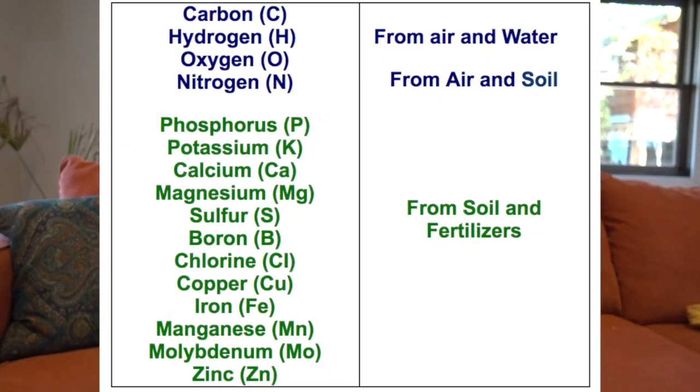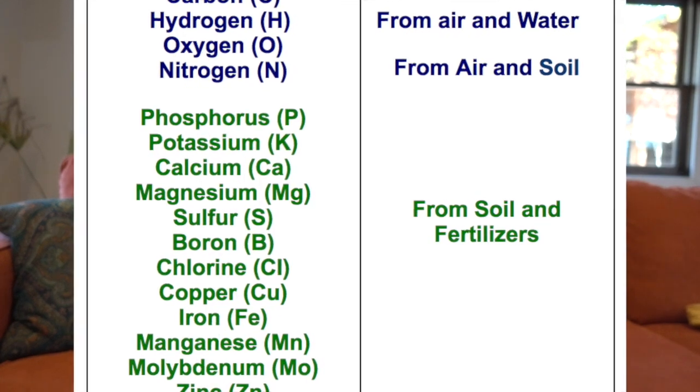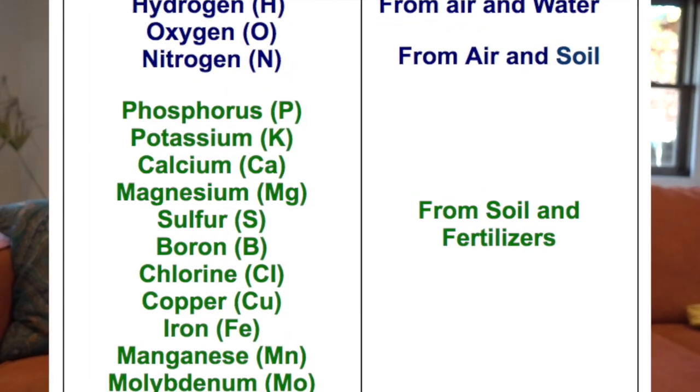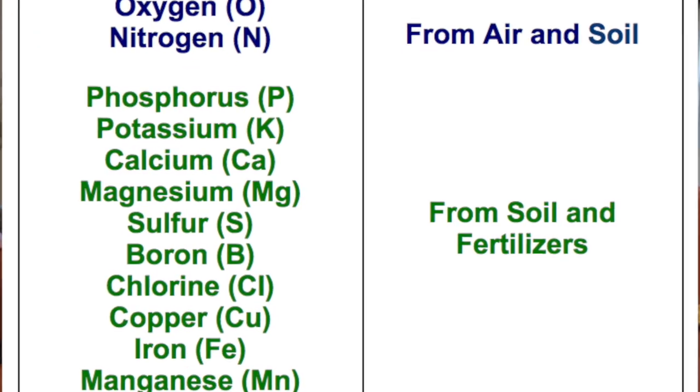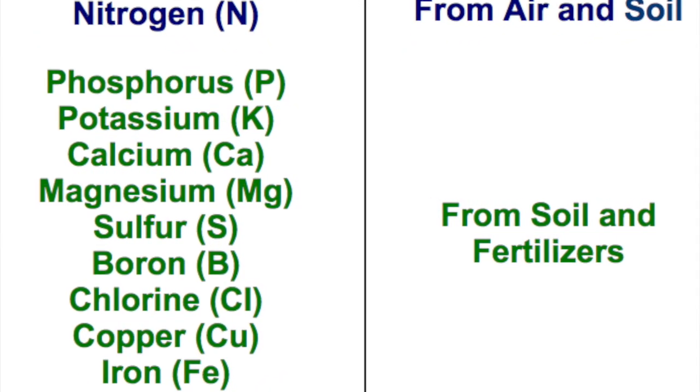Someone posted asking about nickel — how even an imbalance in nickel can cause imbalances elsewhere, and that's true. You have to think about all of this holistically. There are 16 essential plant nutrients: carbon, hydrogen, oxygen, nitrogen, phosphorus, potassium, calcium, magnesium, sulfur, boron, copper, iron, manganese, molybdenum, and zinc.